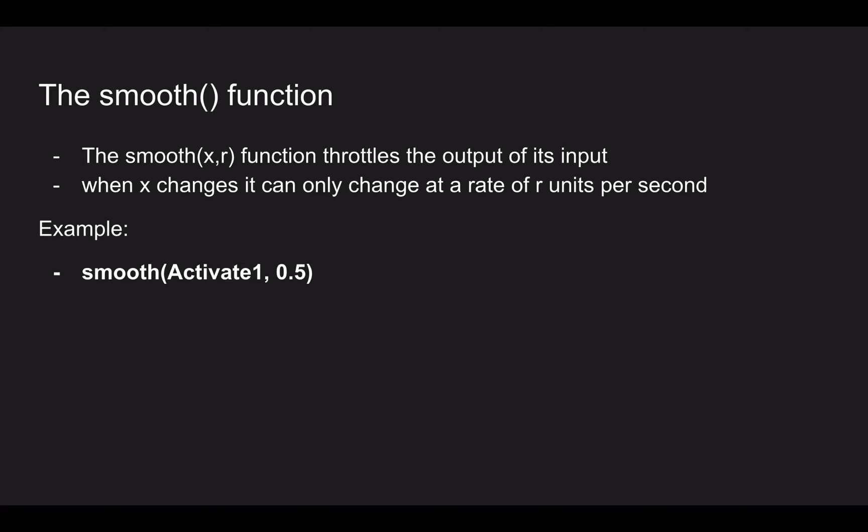For example, we can see smooth(activate1, 0.5). In this case, when activate one changes, instead of the change being instant, you're going to have activate one change at maximum a value of 0.5 units per second, which will give you some sort of delay. But this is not the exact delay we want. This is just an example of what we're going to have.